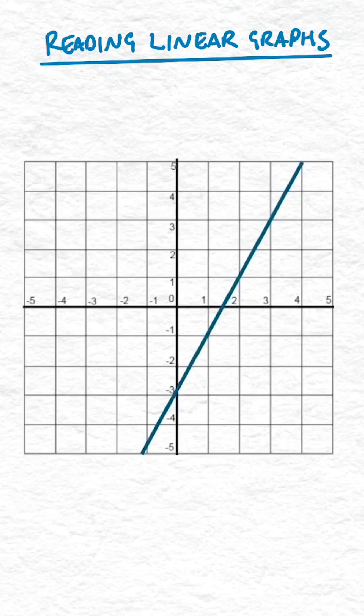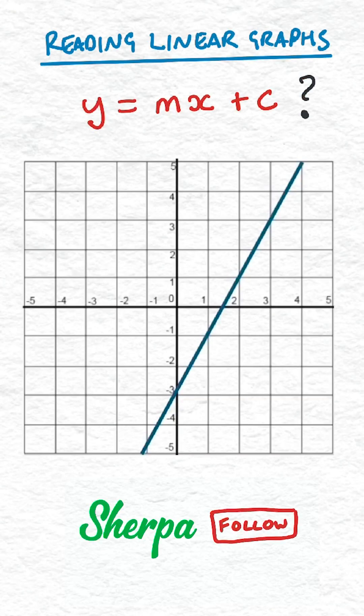To find the equation of a line from a graph, we need to find two things: the gradient m and the y-intercept c.